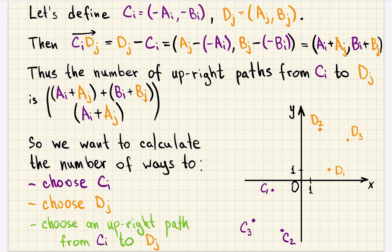Let's introduce points c_i and d_j. So c_i has coordinates (-a_i, -b_i), and d_j is a point (a_j, b_j). So we have two sets of points, symmetric with respect to origin.